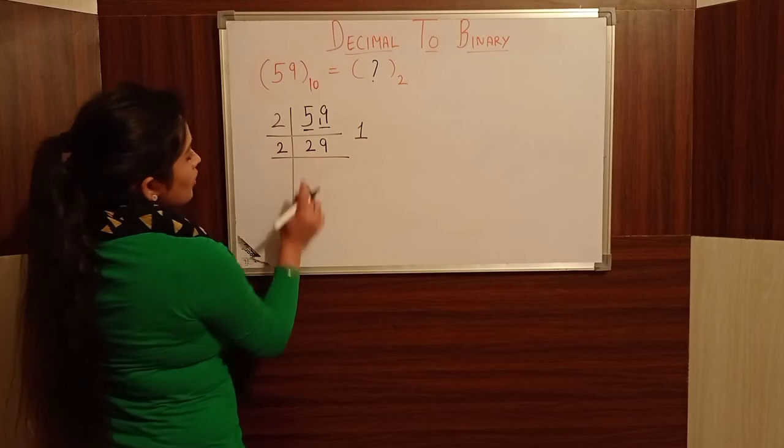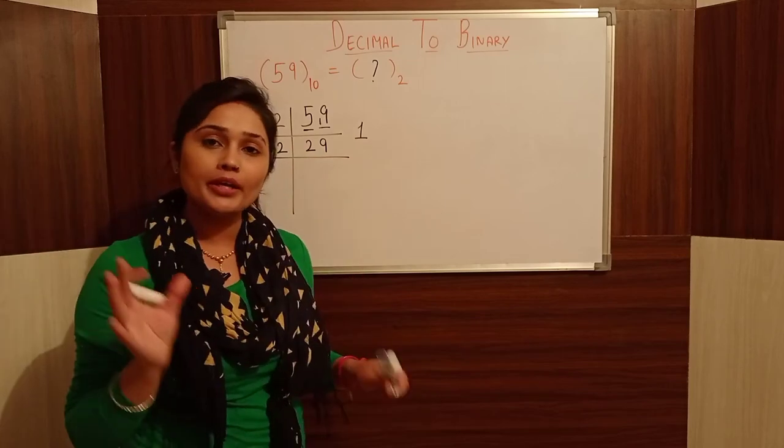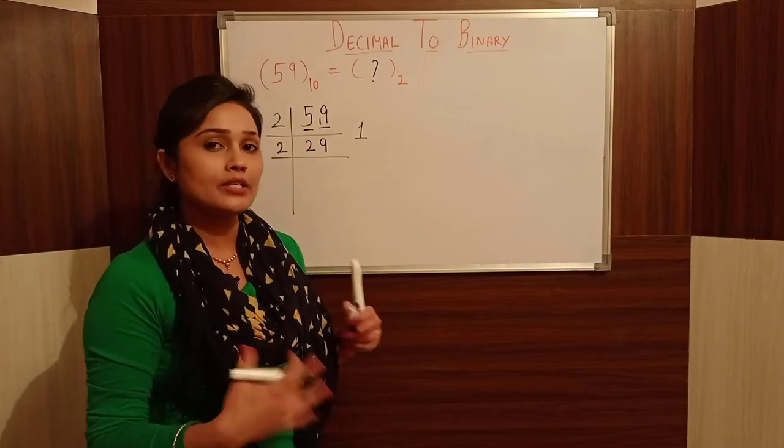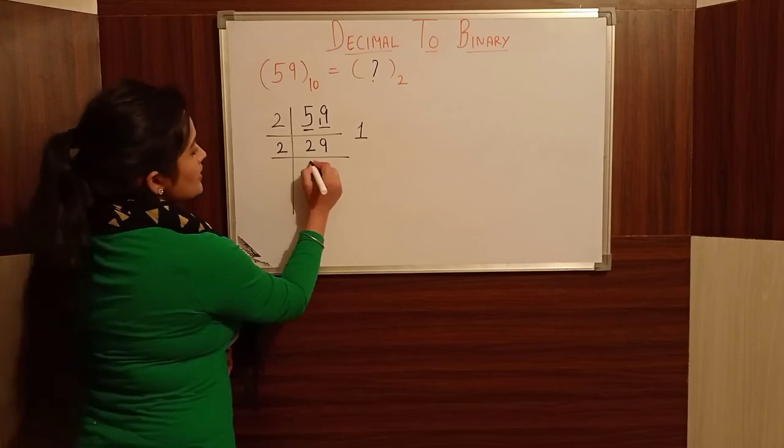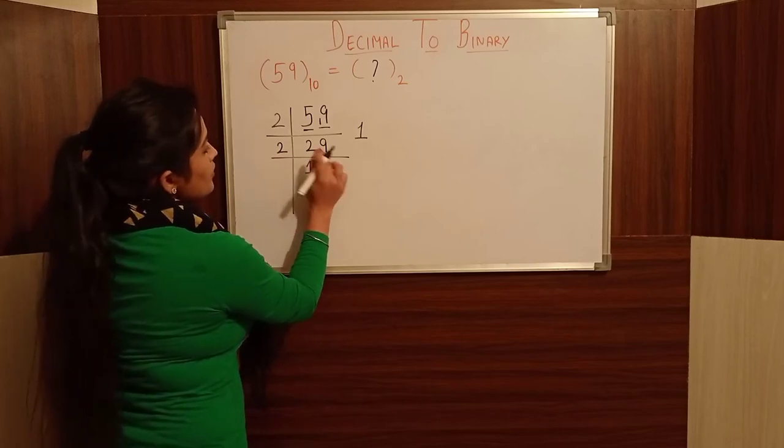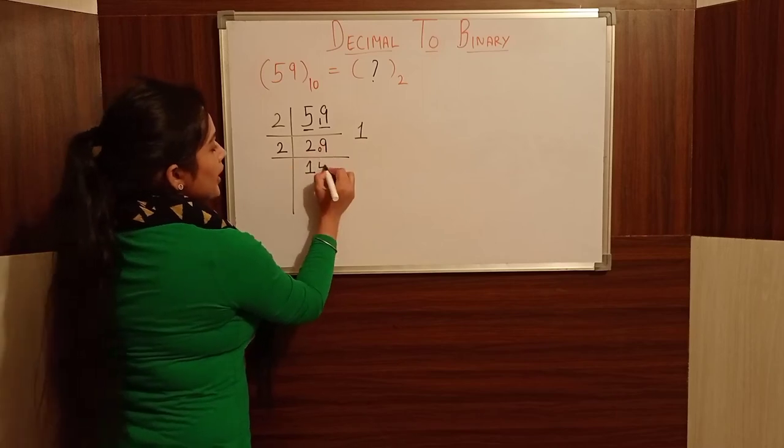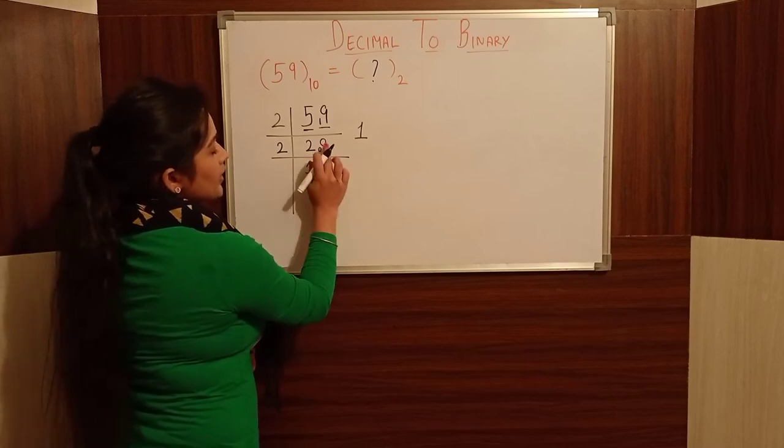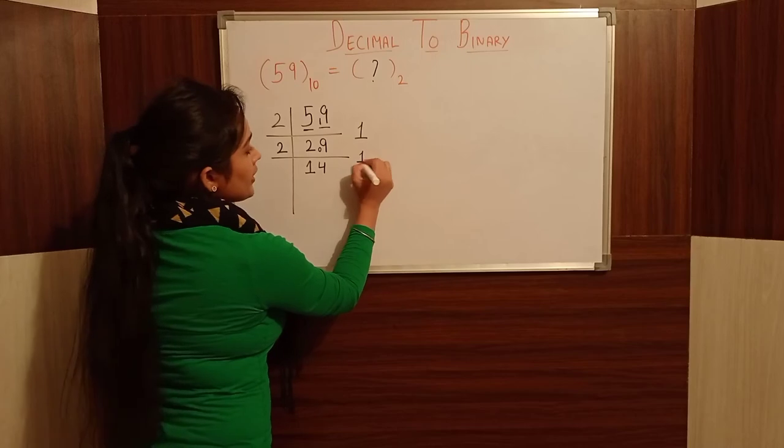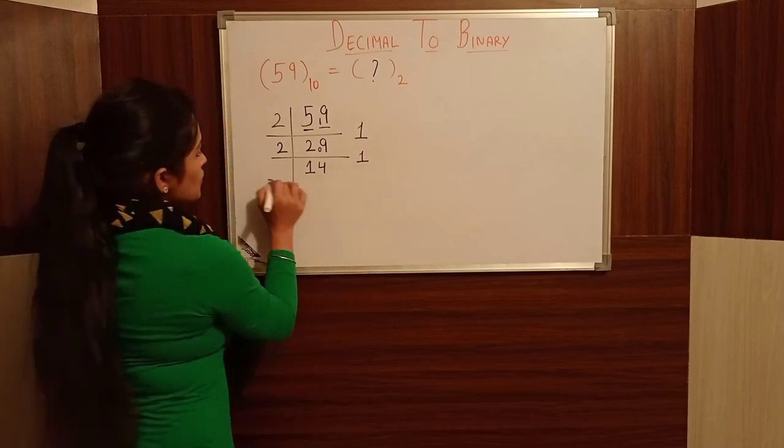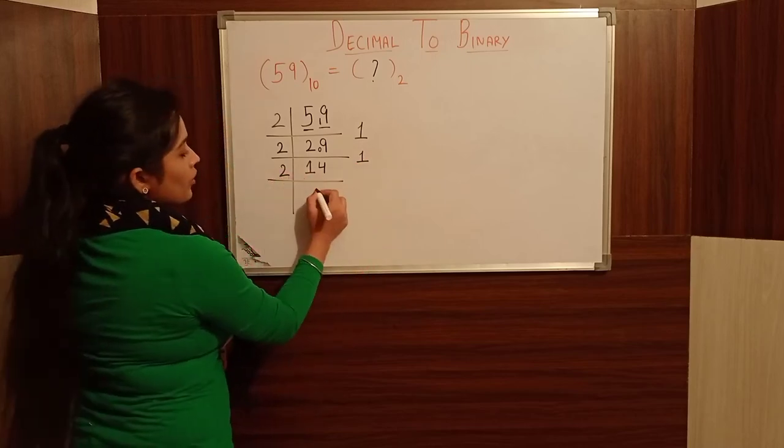Let's continue. We get 1, then 0. We keep dividing by 2 at each step.